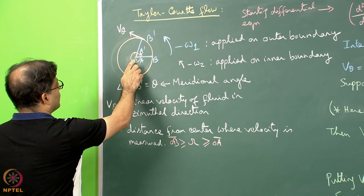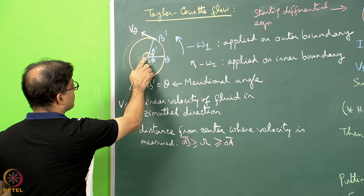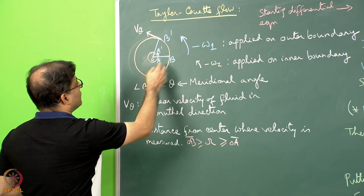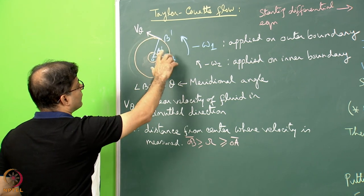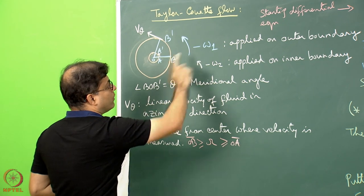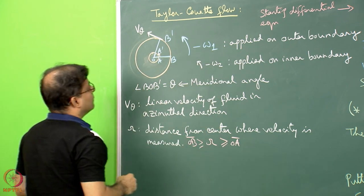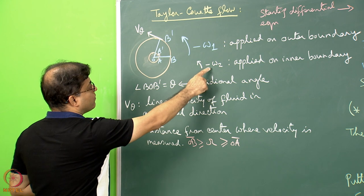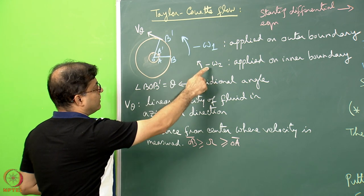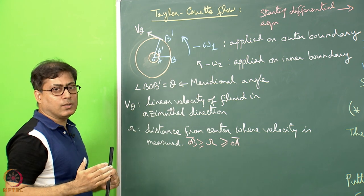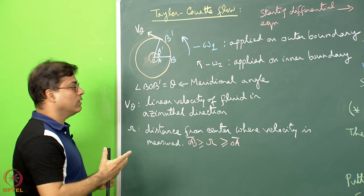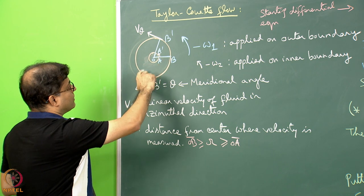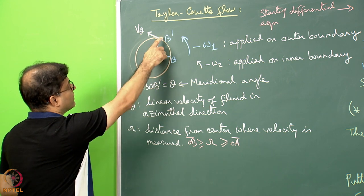We consider a line before deformation as OAB, where O is the center of both concentric circles. The outer circular arc is rotated with angular velocity minus omega 1, applied on the outer boundary, and the inner circular boundary is rotated with velocity minus omega 2. Both have negative signs, meaning their rotation directions are the same. After such rotation, OAB can attain the position OA dash B dash.